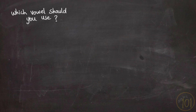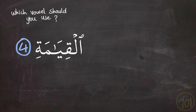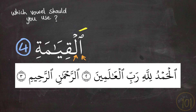Last, if Hamzat Wasl is part of the definite article 'Al,' it will always get Fath on top of it. So when it is part of 'Al,' I will always put Fath on top of Hamzat Wasl.